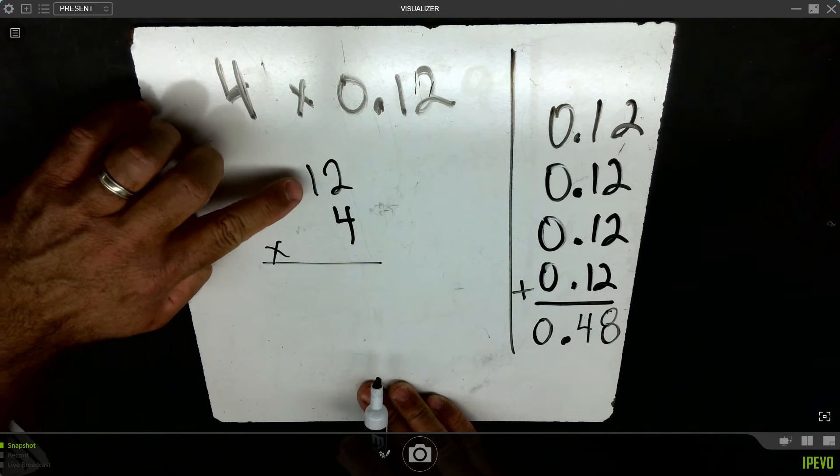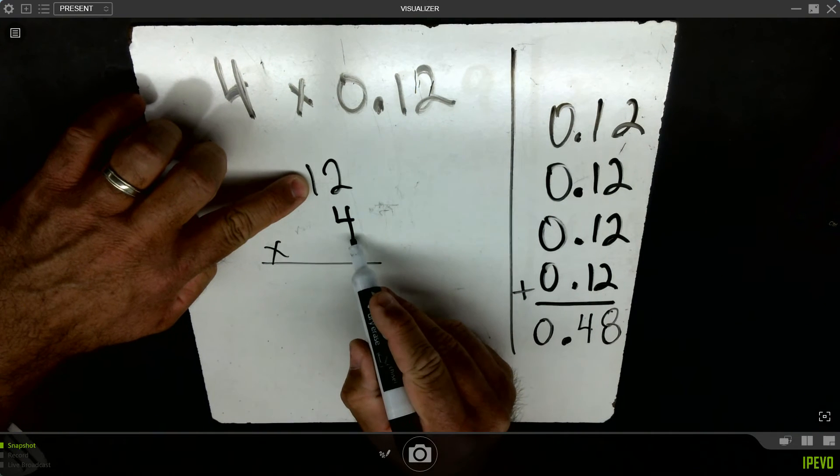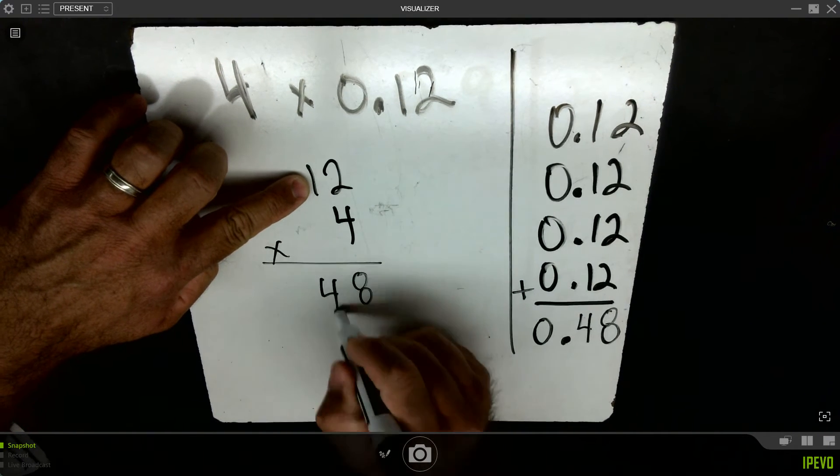Let's treat 1,200s like a whole number for a moment. I see 4 groups of 2 ones, which is 8 ones. I see 4 groups of 1 ten, which is 4 tens, and that would give me a number of 48.